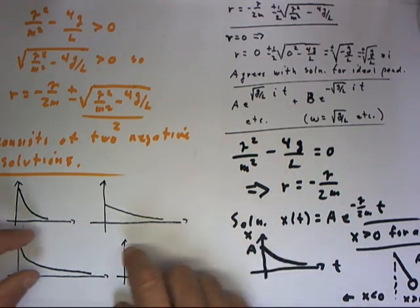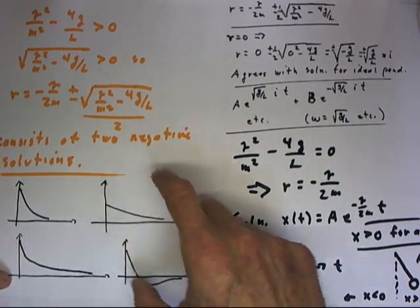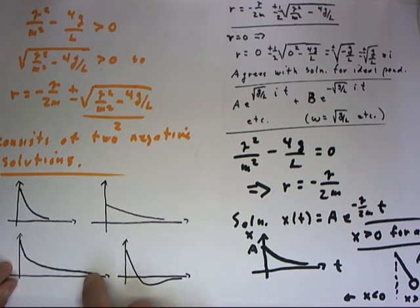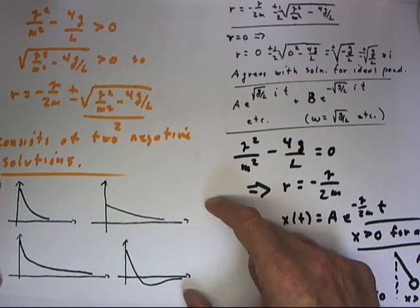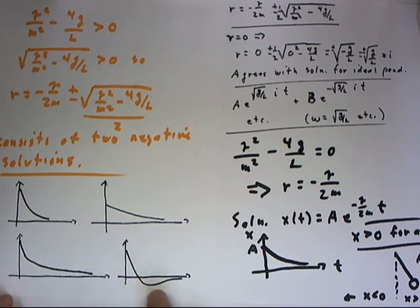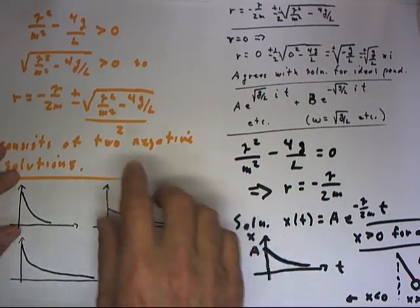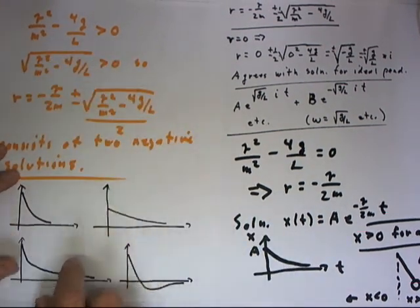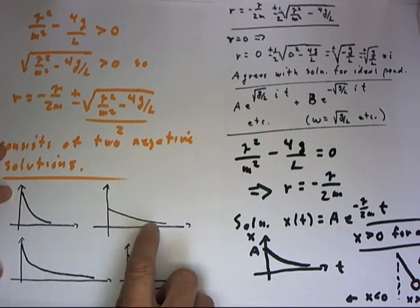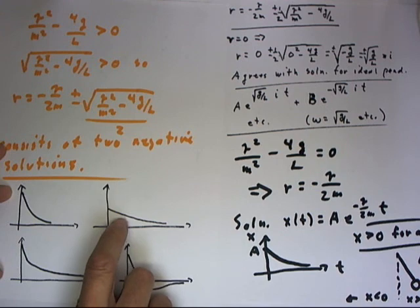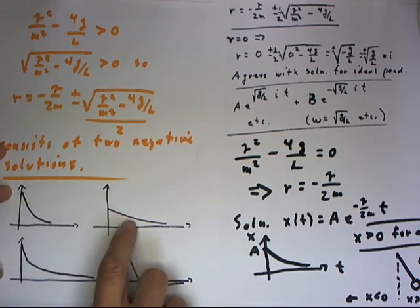We'll see later how these specific initial conditions can give us both of these types of solutions. For right now, we'll simply stick with the conceptual idea that when this discriminant is positive, we get a combination of two exponential functions, one of which approaches zero relatively more rapidly than the other.